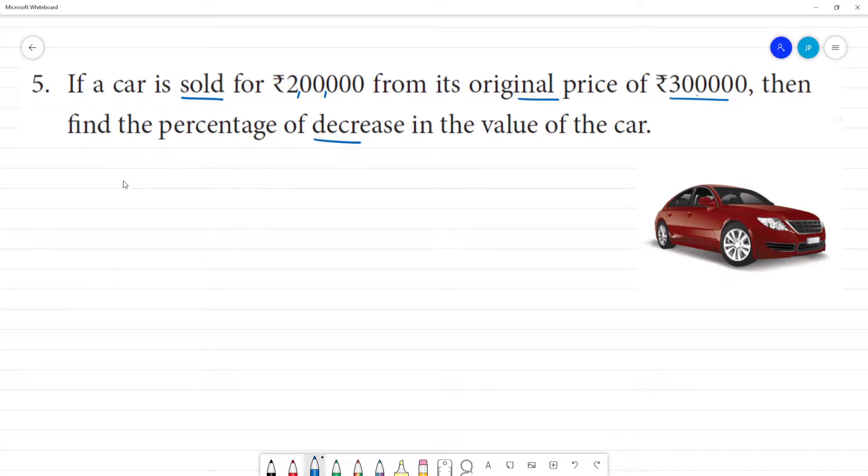So, the percentage of decrease is equal to change in price divided by the original price or initial price, multiplied by 100.